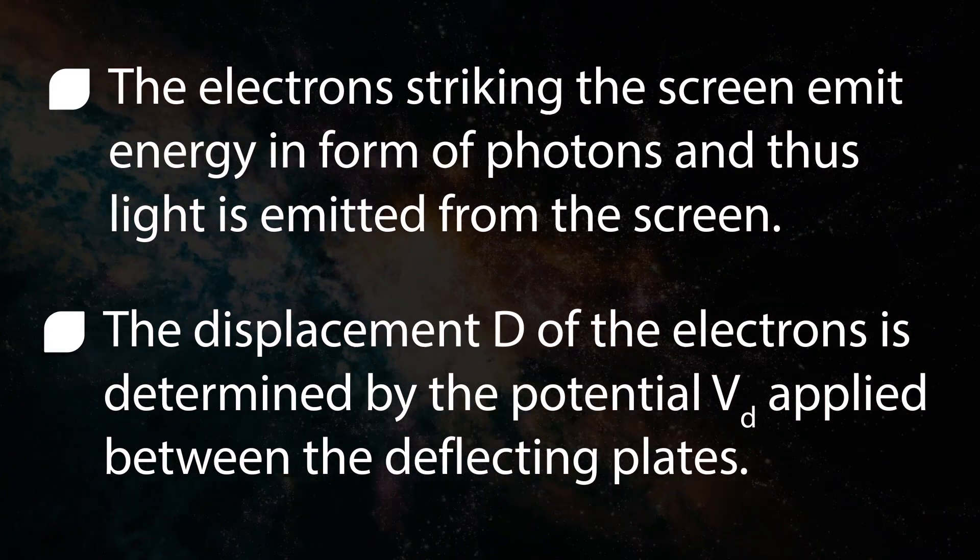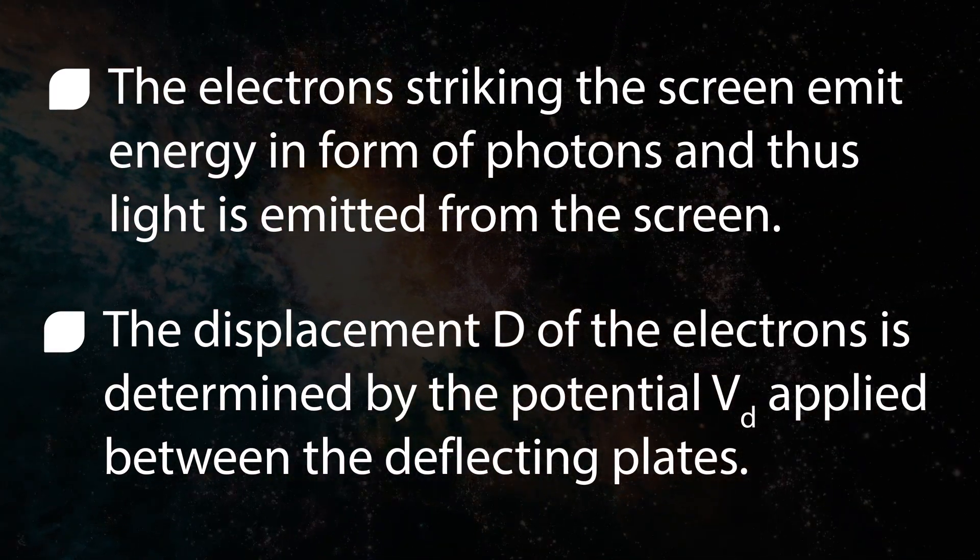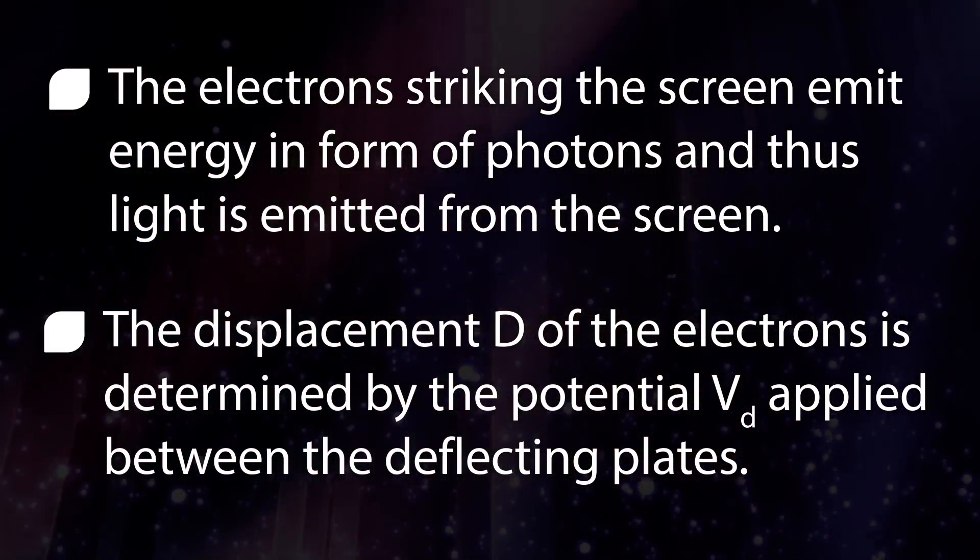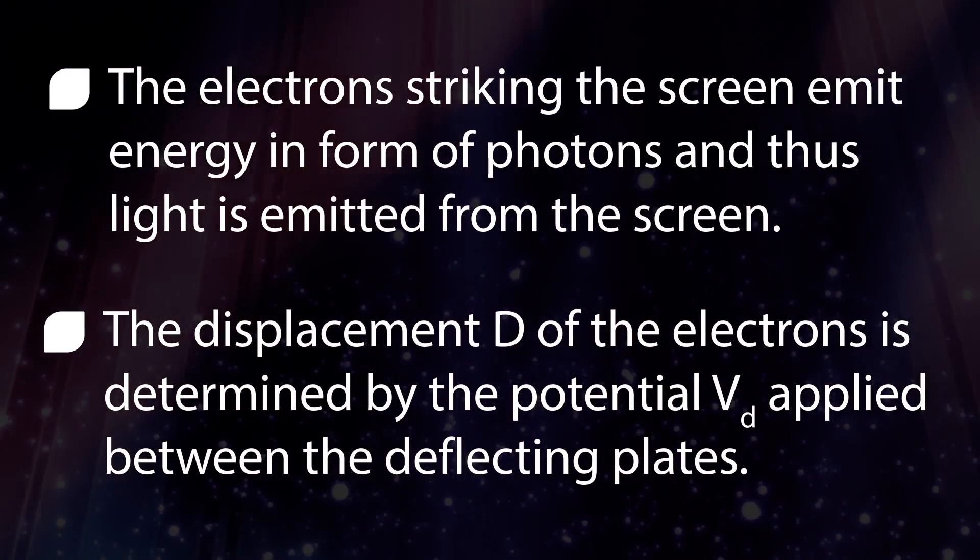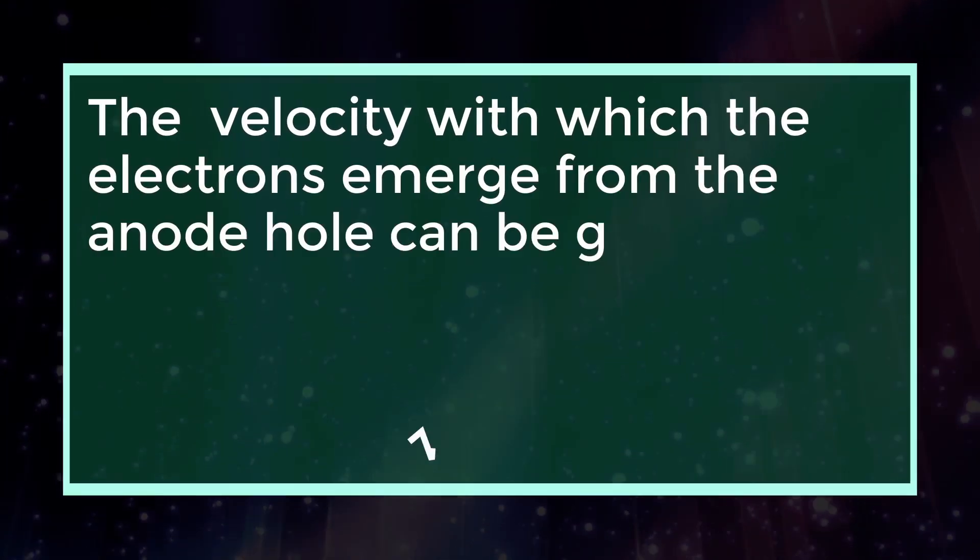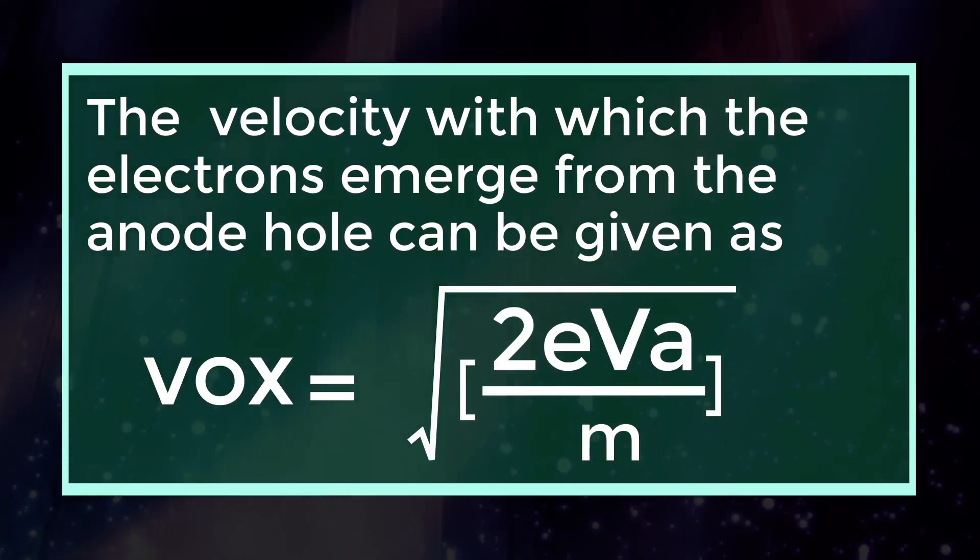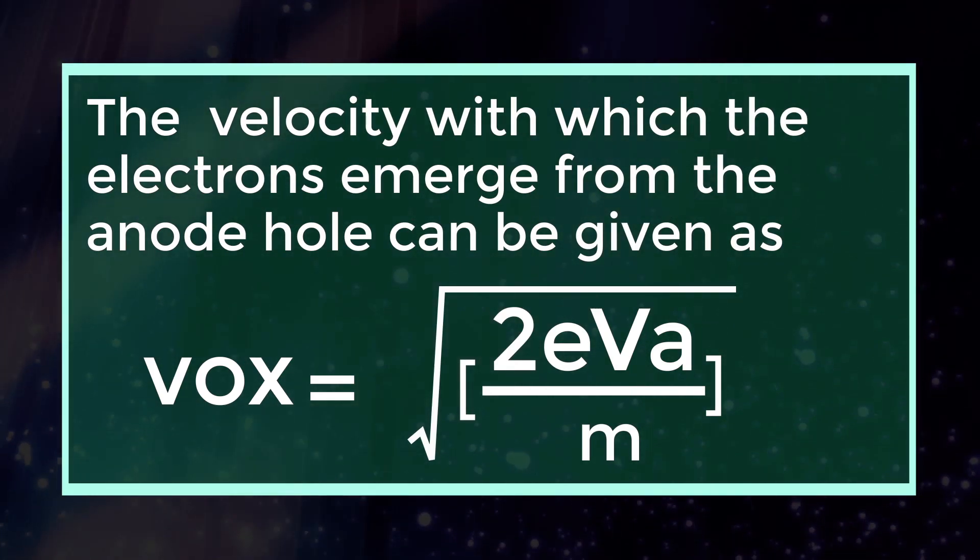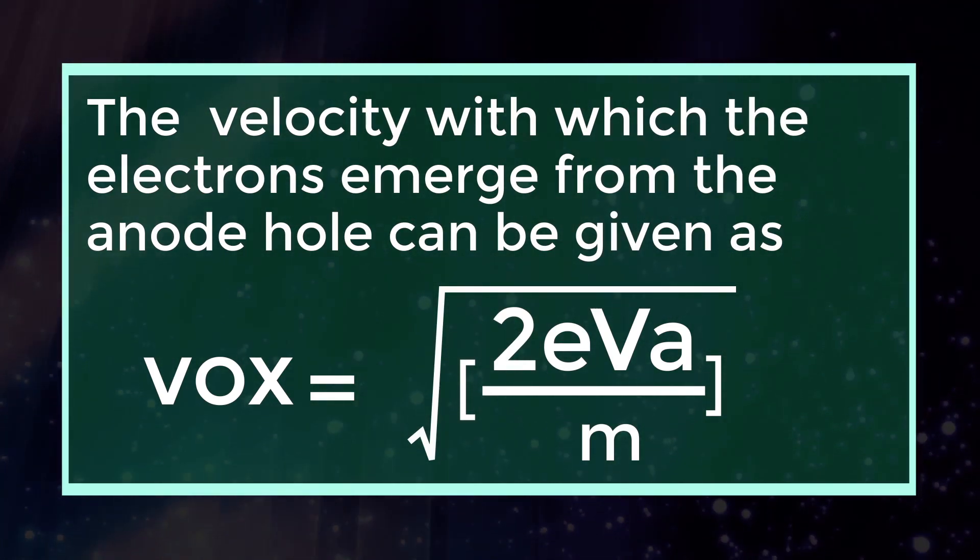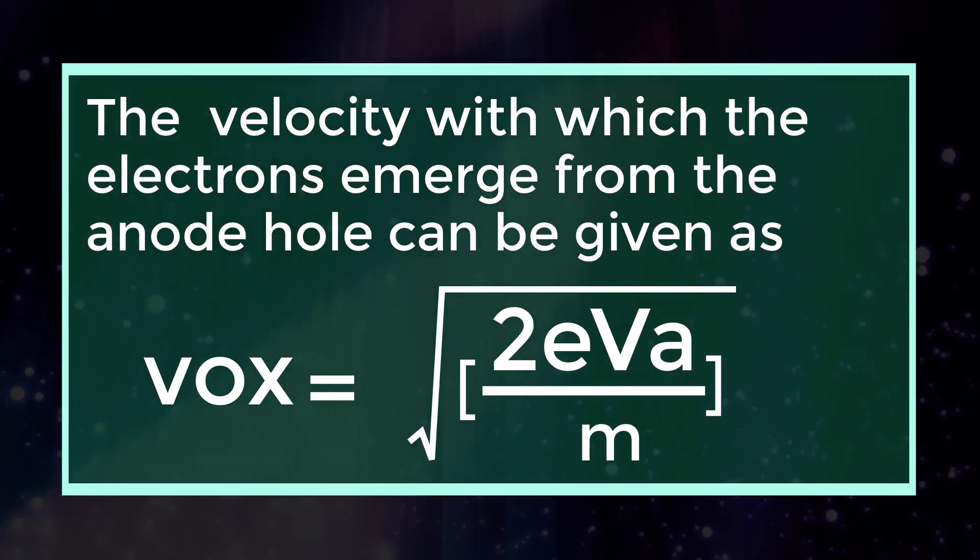The displacement D of the electrons is determined by the potential VD applied between the deflecting plates. The velocity with which the electrons emerge from the anode hole can be given as V0X equals to root of 2EVA by M.